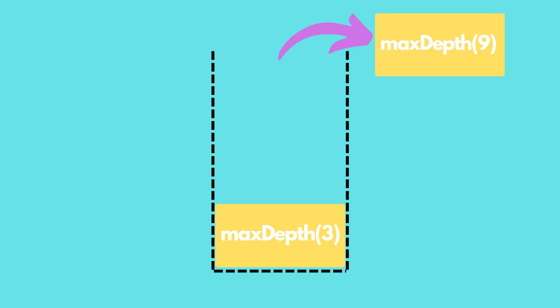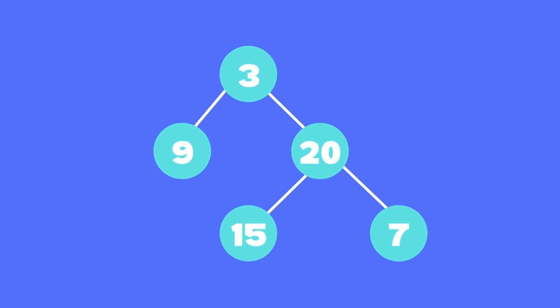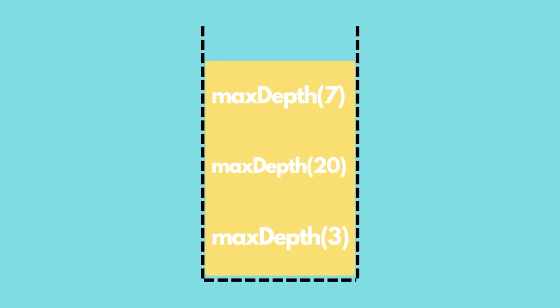After this call finishes executing, it gets removed from the stack. And then the root node calls the node to its right which is 20 and that call is also added to the stack. This keeps going and the stack reaches the maximum size when the call to the node 15 or 7 is being executed.